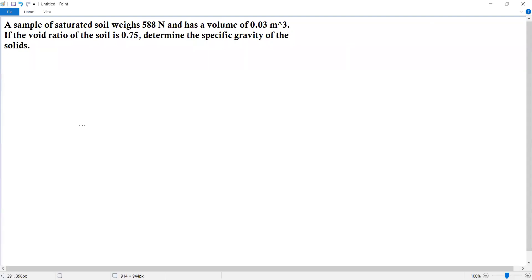A soil sample of saturated soil weighs 588 Newtons and has a volume of 0.03 cubic meters. If the void ratio of the soil is 0.75, determine the specific gravity of the solids.